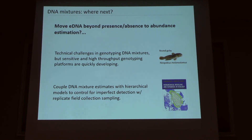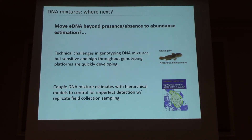Ultimately, what we would like to do with this tool — and the excitement about it — is take eDNA and move beyond presence-absence to make it a count-based tool, which would be quite exciting. We actually have a grad student at Cornell working on this right now with round goby as our model system. We've put them in buckets, extracted water, and we're actually able to reconstruct genotypes from that. The next step, once we get the bioinformatics pipeline worked out, is to try it out in the field.